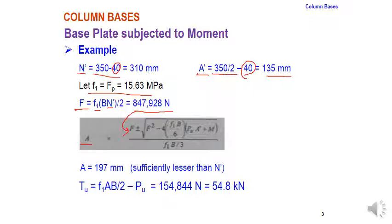From the quadratic equation, two roots are obtained and the suitable one is selected as discussed in the theoretical lecture. Capital a = 197 mm, which is sufficiently less than N'. Then Tu = f1 × a × B / 2 − Pu = 54.8 kN.